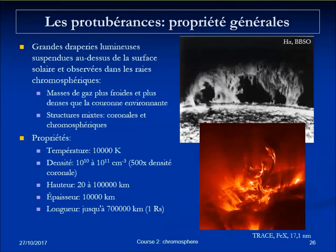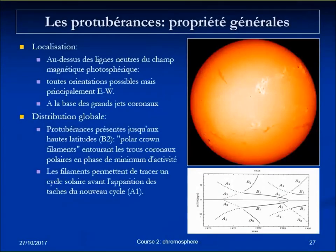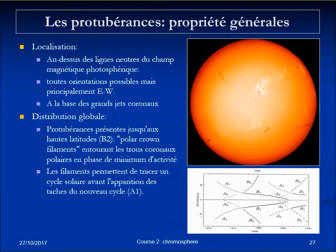As for localization and orientation, there is a predominance parallel to the equator, but almost any orientation is possible. Prominences correspond to broad neutral lines spanning thousands of kilometers. They often form the base of coronal jets and coronal streamers. Although some filaments are located inside active regions, many are not related to active regions at all, appearing almost everywhere on the Sun and not only at low latitude.